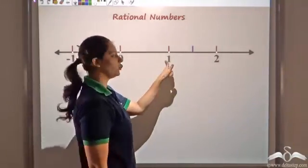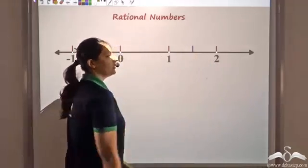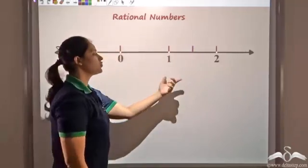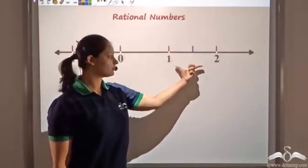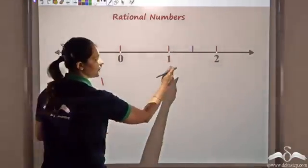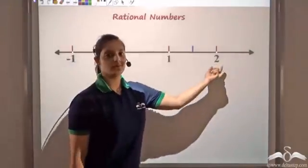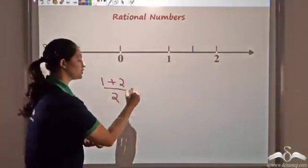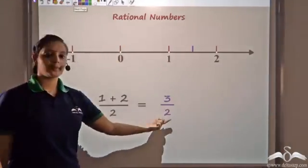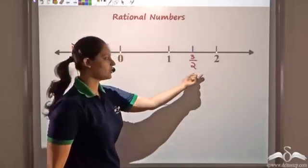So now I want to find a number between 1 and 2. What about the midpoint of 1 and 2? This distance is 1, so the midpoint would be half of this distance. To find the midpoint between these two numbers, simply compute 1 plus 2 divided by 2. That gives me 3 by 2. So 3 by 2 represents the midpoint of 1 and 2.